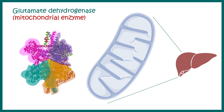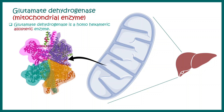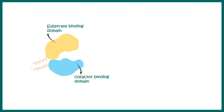Glutamate dehydrogenase is a homohexameric allosteric enzyme. It is a bit different from others because it can bind to both NAD and NADP simultaneously. If we look at the monomeric structure of glutamate dehydrogenase, it has a cofactor binding domain and a substrate binding domain.